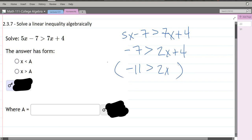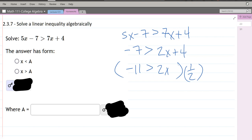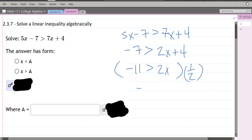Multiply both sides by 1/2, or divide by 2. This is positive 1/2, so it's not going to flip the inequality backwards. So we multiply, we have negative 11 over 2 greater than x.